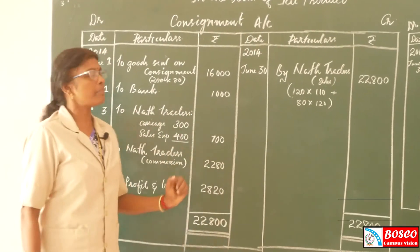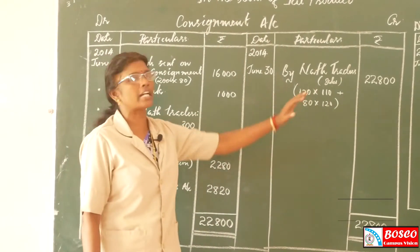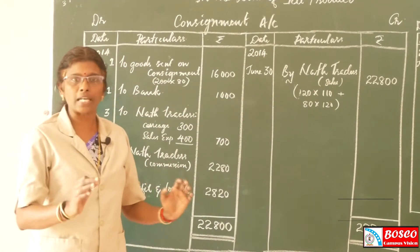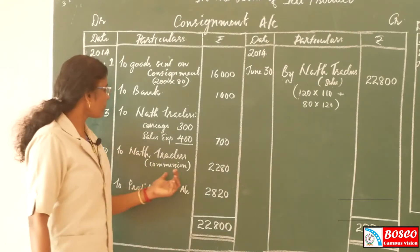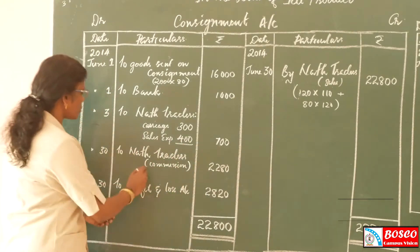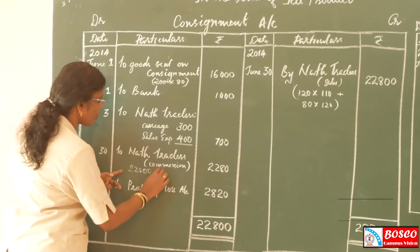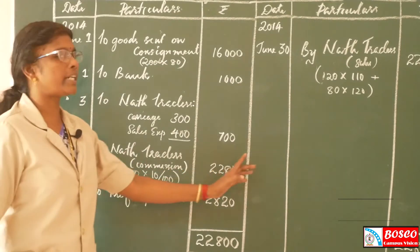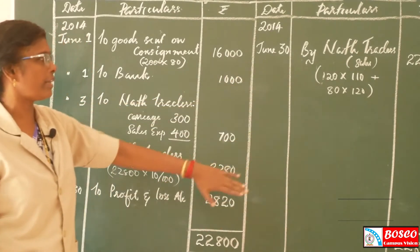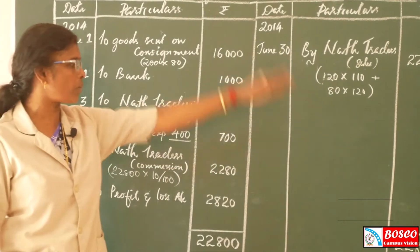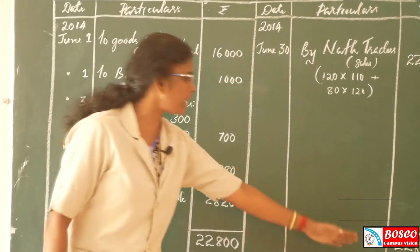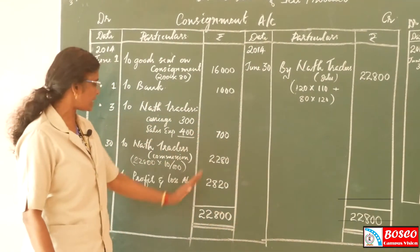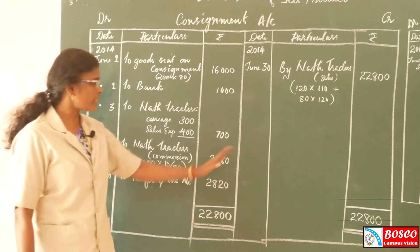Next, commission: 10% of the sale proceeds. We have total sales of Rs. 22,800, so commission is 22,800 × 10/100 = Rs. 2,280. Then we find the balancing figure. If the credit side is more than the debit side, the result is a consignment profit; otherwise it is a loss.